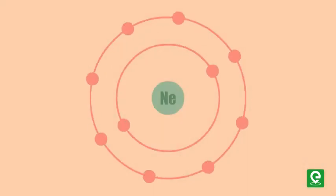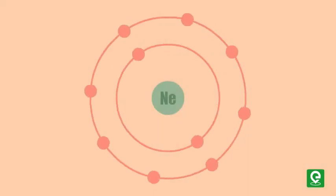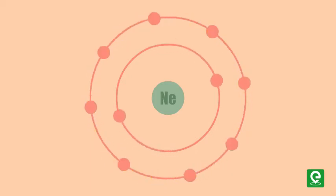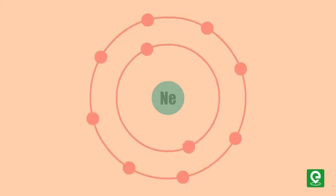The reason behind the inertness of these elements is hidden in the electronic configuration. An element is stable if its valence shell or outermost orbit contains eight electrons. For example, neon has eight electrons in its outermost orbit, which is a stable electronic configuration.